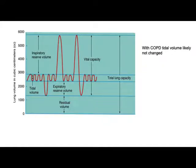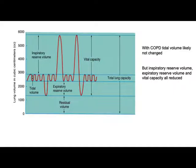With COPD, a person compared to a normal trace would likely not show a change in tidal volume — that band in the middle would look similar. One thing that might differ is its place within the vital capacity: residual volume is often higher, so this band is pushed upward. People with COPD tend to breathe higher in the lung. As a result, they have less inspiratory reserve volume — less space available to take a deep breath if needed.